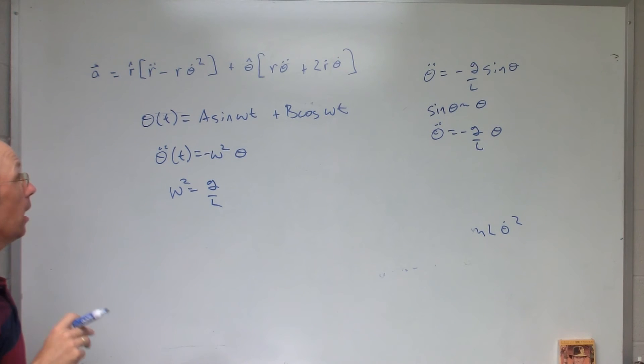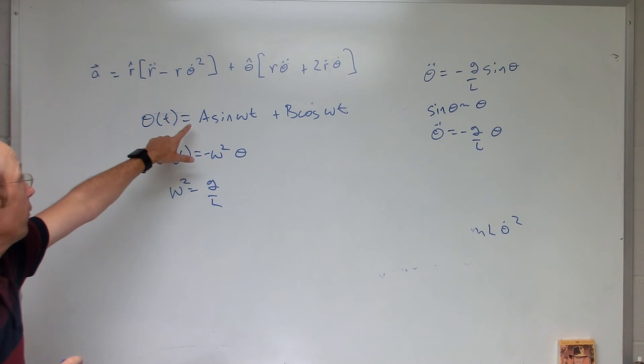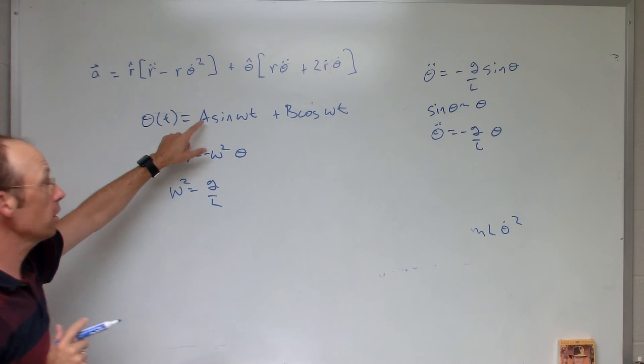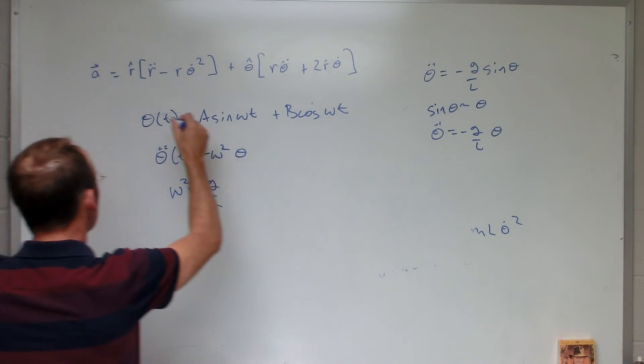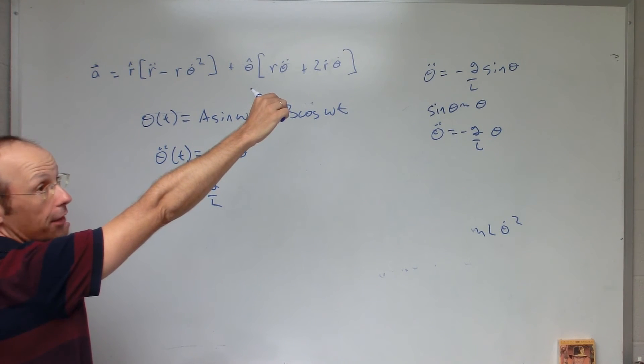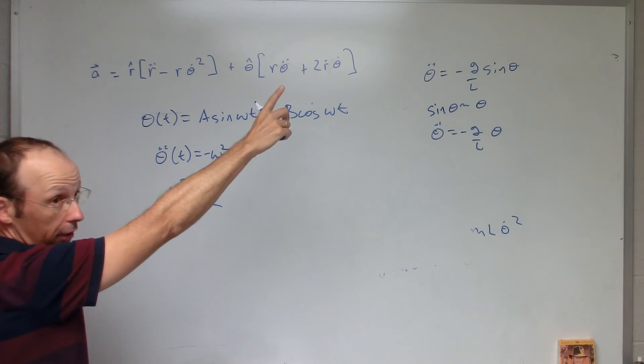Okay. But what about a and b and how do we find those? This, when I have something like this, I need to apply initial conditions. So let's say that my pendulum started from rest at an angle of theta zero and I've released it from rest.